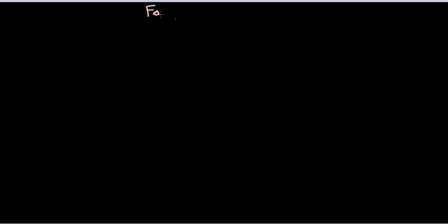In this video tutorial, we will be learning what is the fate of a viral infection. If I talk about the fate of viral infection in the whole human body, there can be several different rounds of effects and symptoms, but I'm going to talk about the fate of viral infection at a cellular level. There are four types of fate of viral infection, depending upon the type of virus that is infecting us, the type of their release, and their replication scheme.